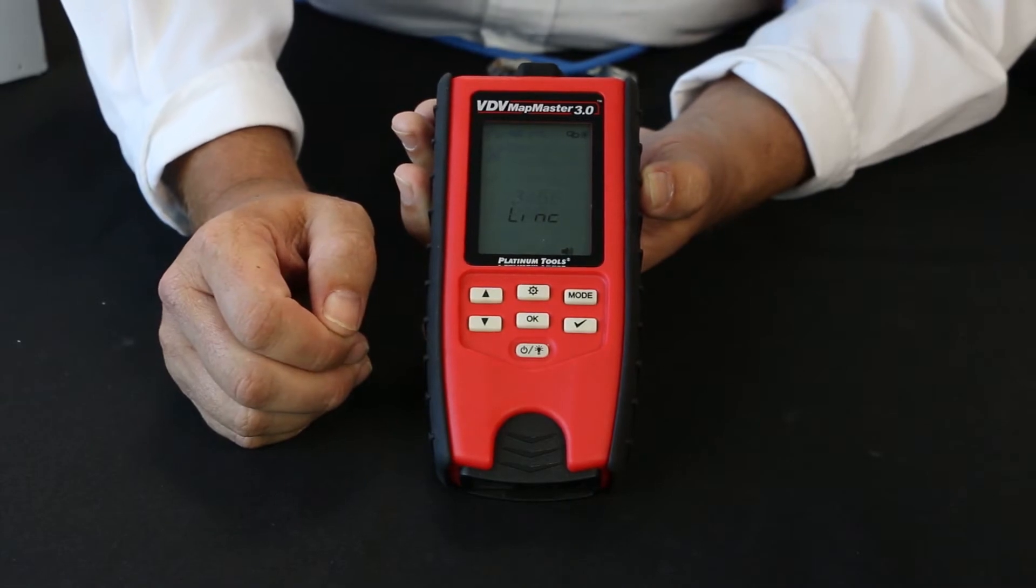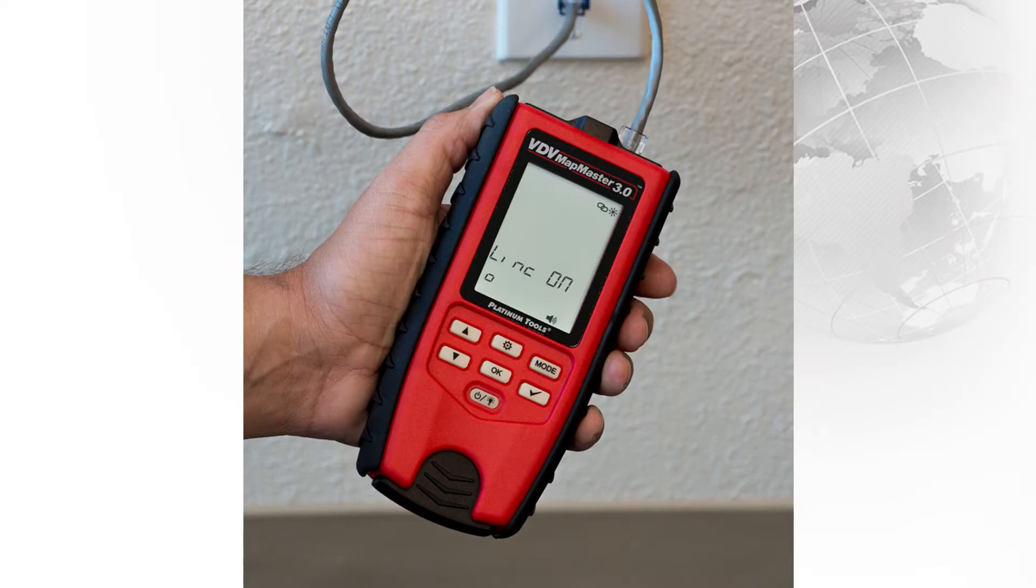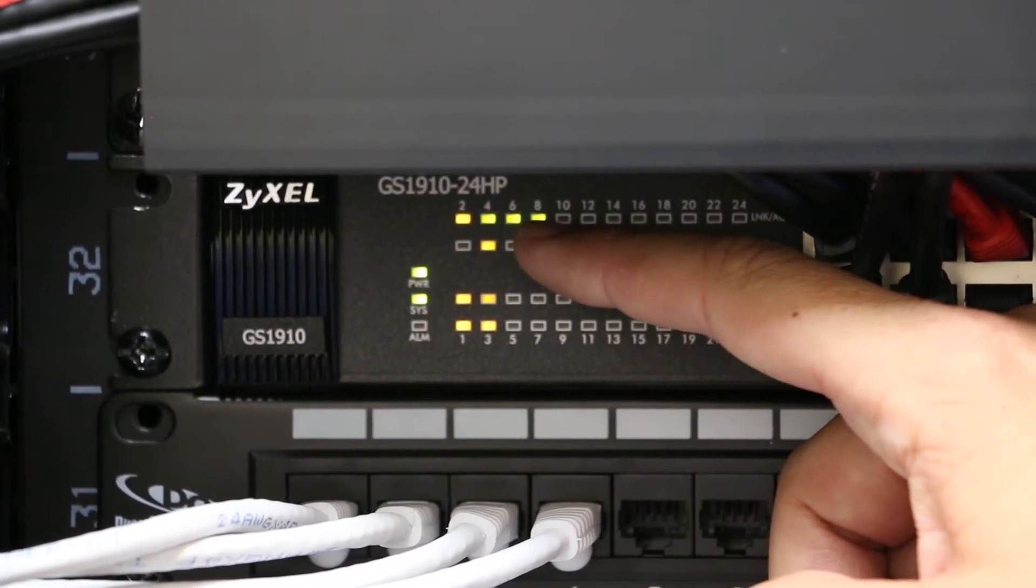This will flash the LED light on your switch or router to help locate cable on a switch. This feature makes it easy to locate active Ethernet runs to your switch by the flashing LED light.